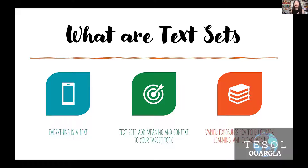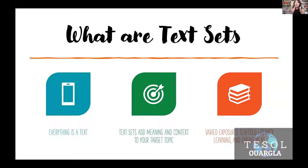The second thing is that all these texts related to the topic have to add meaning. Let's say you're going to teach your students about Algerian history. You have so many texts about Algerian history, but which one adds meaning and context to what you are teaching? That's the question you need to ask: what is going to add meaning and context to the specific topic I have picked?